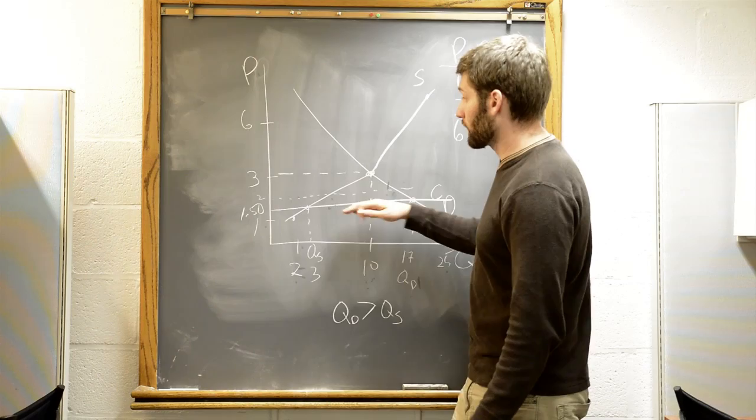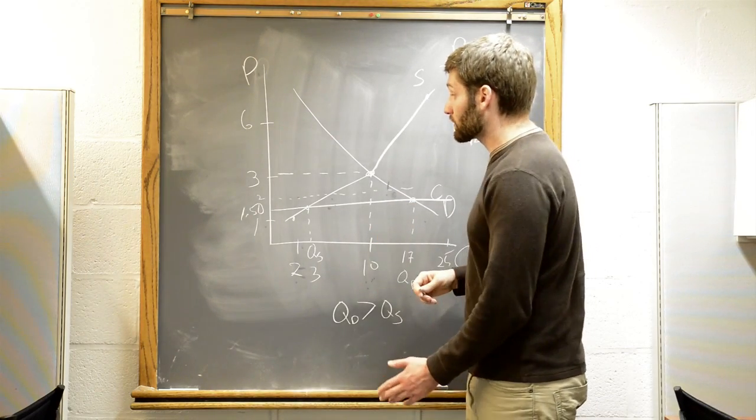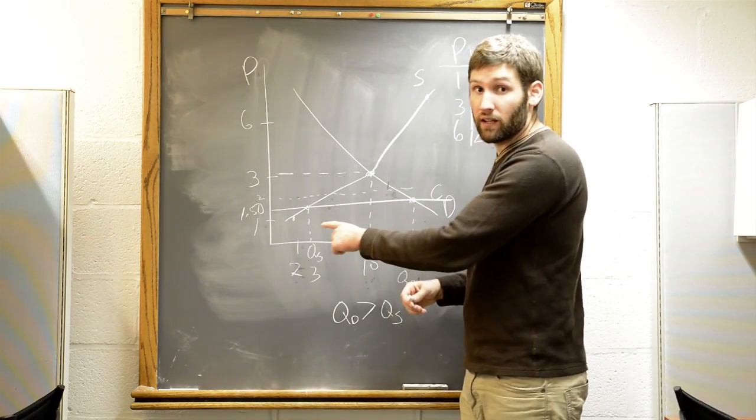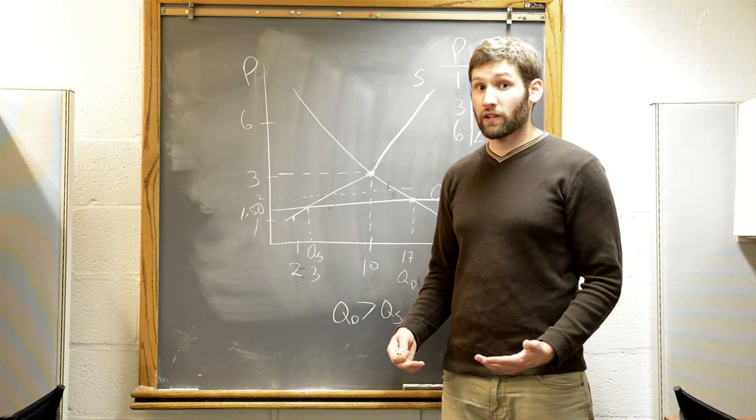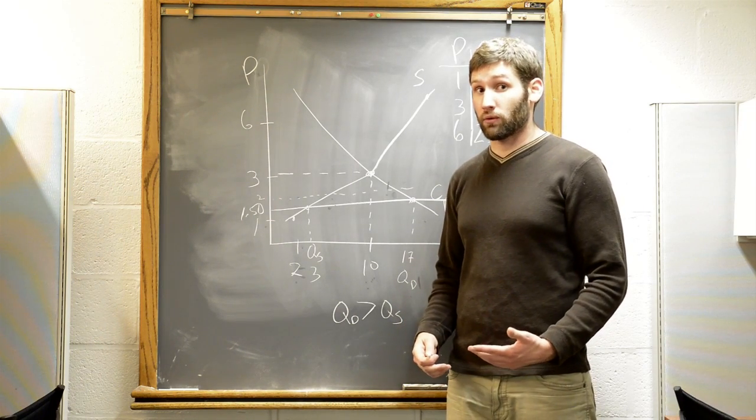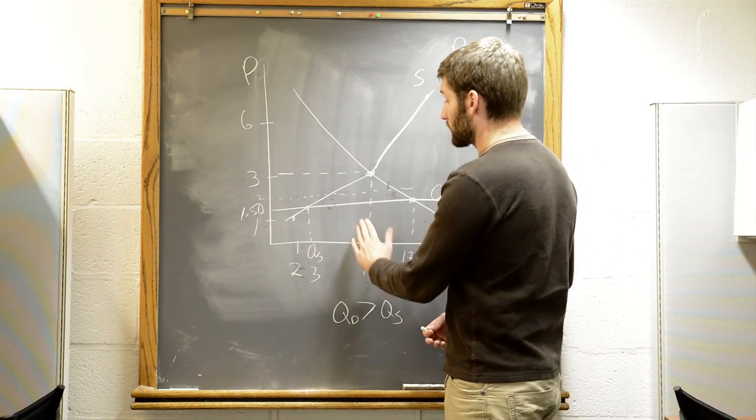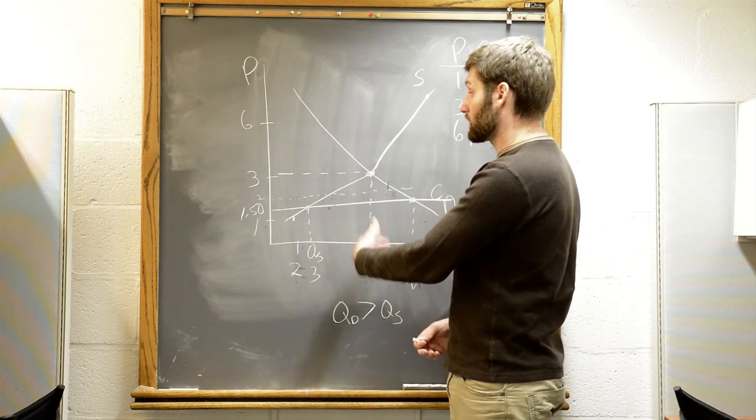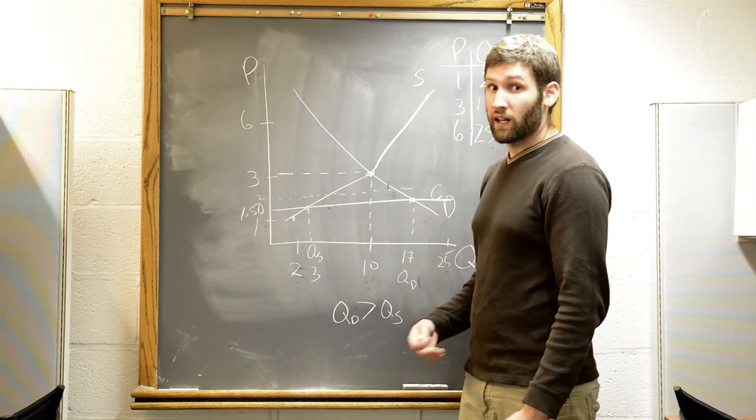So at that point, all those people can pay $3 and get their jam. If the price goes lower than that, then the quantity sold is whatever is being supplied. If there's only three jars of jam on the shelf, only three jars can be sold. So the quantity sold, in this case, is the quantity supplied, which is the lesser of quantity supplied and quantity demanded.